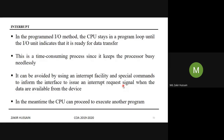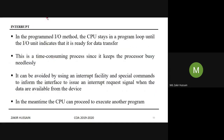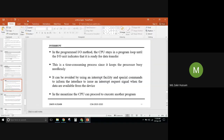I will count down so someone can come forward if they have a doubt about Programmed I/O. Countdown: 5, 4, 3, 2, 1, 0. I assume no doubts. Let us go to Interrupt I/O.